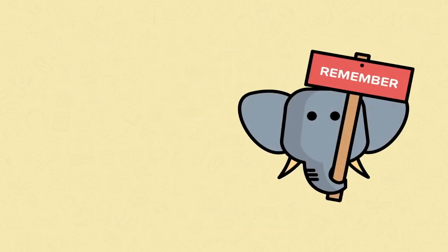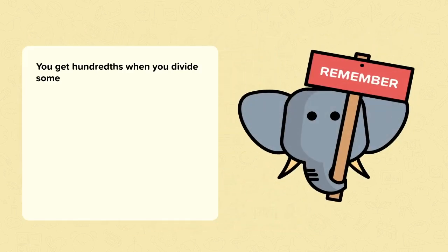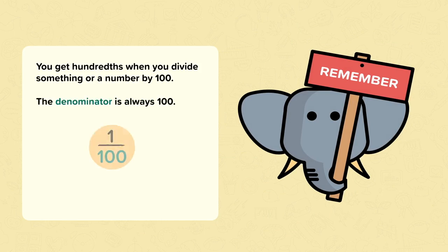So remember: you get hundredths when you divide something or a number by a hundred, and the denominator is always one hundred. You also get hundredths when you divide a tenth by ten.